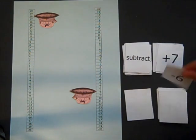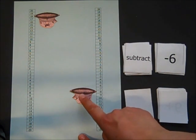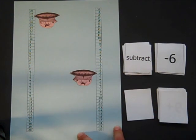I'm going to subtract negative 6, so I'm taking out 6 sandbags, so that's going to make me go up. 1, 2, 3, 4, 5, 6 places.